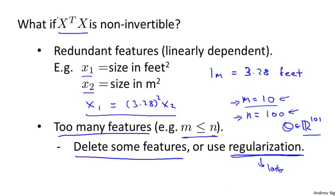But to summarize, if ever you find that X transpose X is singular or alternatively non-invertible, what I would recommend you do is first look at your features and see if you have redundant features like x1, x2 being linearly dependent.